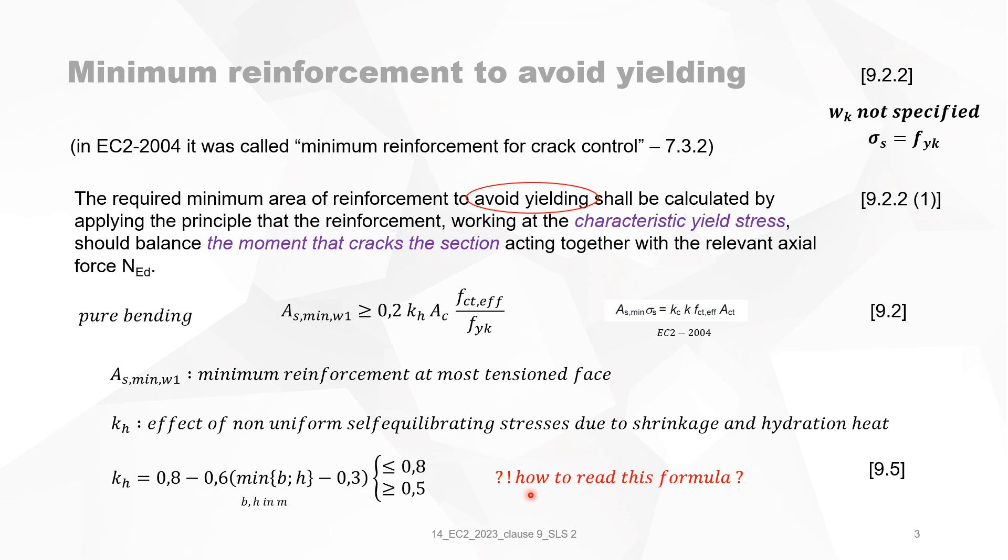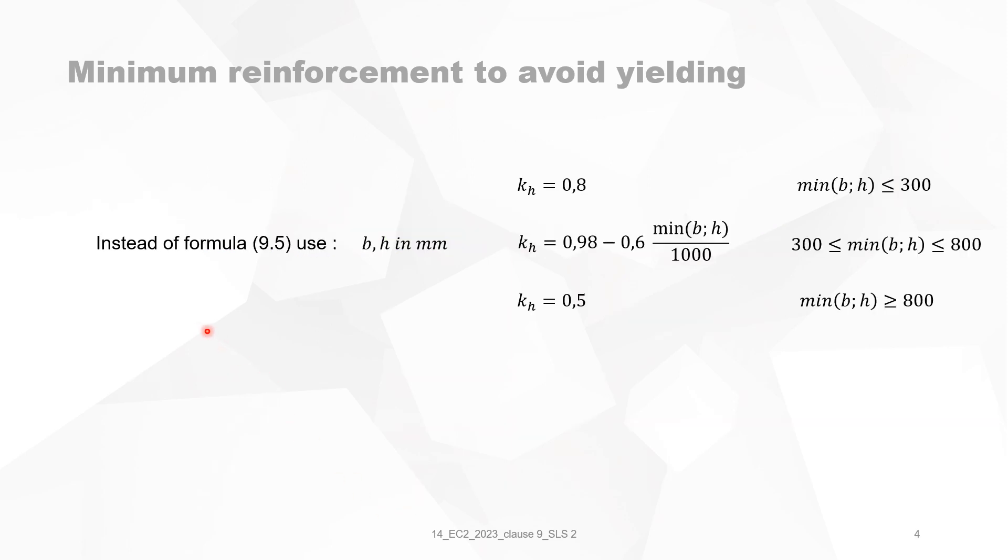But how do you read this formula? This is not mathematics as we know it. This is something strange. You can make an interpretation in very different ways of this formula. So instead of using formula 9.5, I propose to use a more regular and more acceptable way of writing equations, which is when k_h is equal to 0.8, when the minimum dimension of width and height of width and depth is smaller than 300 millimeters. And so on in three different phases. The previous formula, it's too complicated and you can make misinterpretations of it.